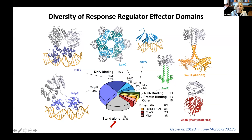The receiver domain can exist as a standalone domain for which the effector domain is a separate protein. An example of this is the chemotaxis protein CheY, which in its active conformation interacts with the flagellar motor to control swimming behavior. Two thirds of response regulators are transcription factors with DNA binding domains belonging to different fold families. Others are RNA binding proteins or protein-protein interaction domains. About 10% are enzymes, the largest class being those that synthesize or degrade the second messenger cyclic di-GMP.